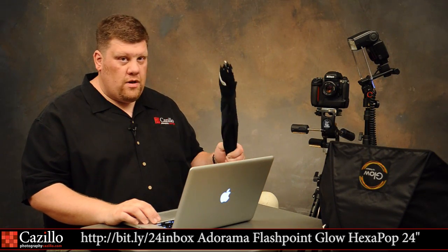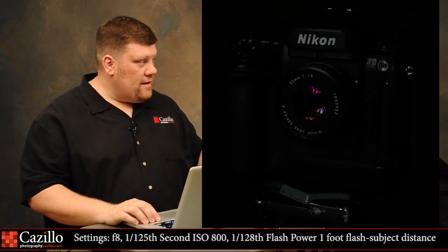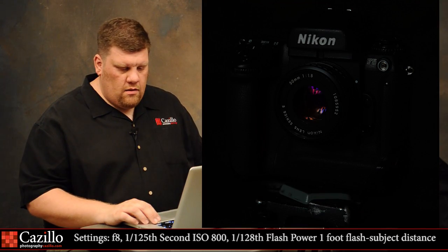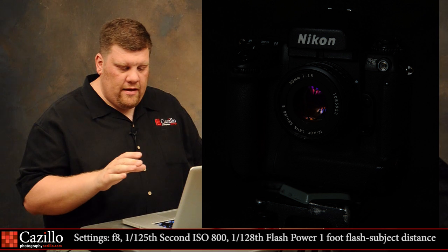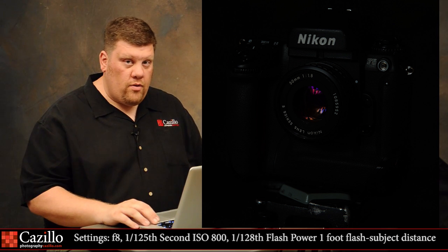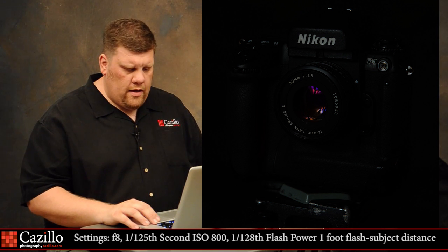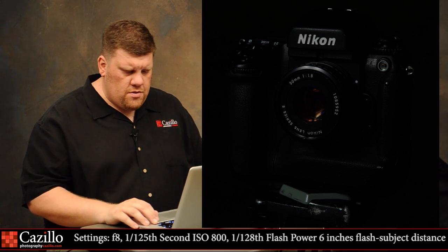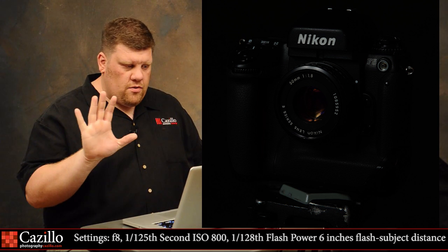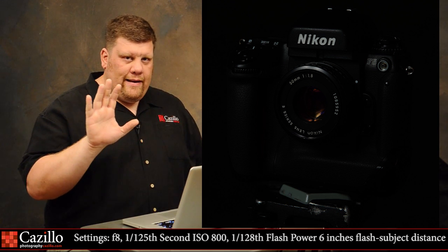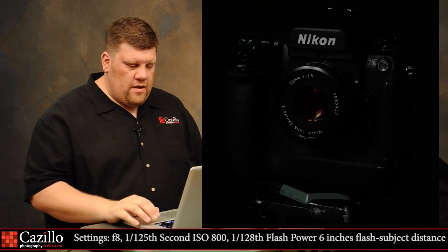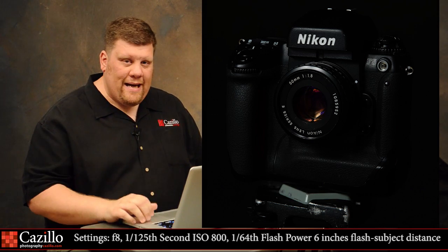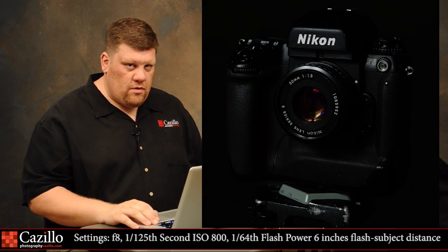Next, I added a 24-inch umbrella, removing the softbox. With the same exposure settings — f/8 at ISO 800 — we're pretty far underexposed. I moved it even closer until I was right up to it and still couldn't get enough light.